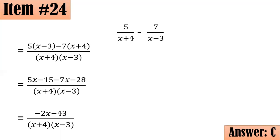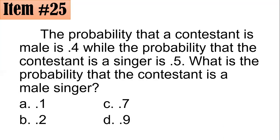Number 25. The probability that a contestant is male is 0.4, while the probability that the contestant is a singer is 0.5. What is the probability that the contestant is a male singer? Is it 0.1, 0.2, 0.7, or 0.9? What do you think?